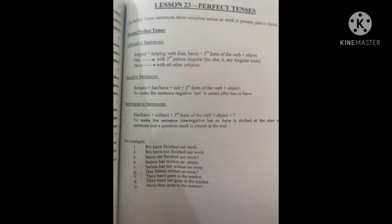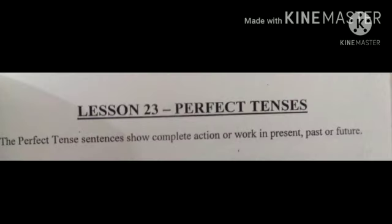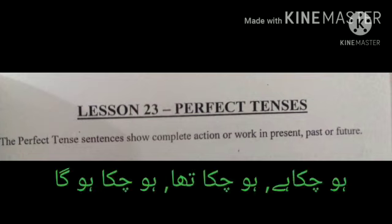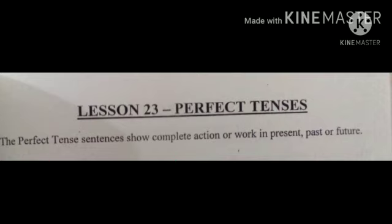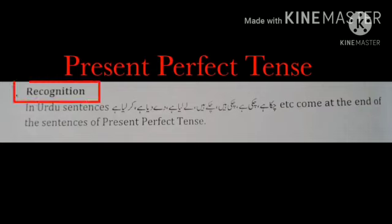Okay students, in this lecture we are going to study about Perfect Tense. The Perfect Tense sentences show complete action or work in present, past, or future. Perfect Tense sentences mean کوئی بھی کام present میں complete ہو چکا ہے, past میں complete ہو چکا تھا یا future میں complete ہو چکا ہوگا. Perfect Tense ہمیں کسی بھی کام کے مکمل ہونے کے بارے میں بتاتا ہے، چاہے وہ کام present میں ہوا ہو یا past میں یا future میں ہونے والا ہو.